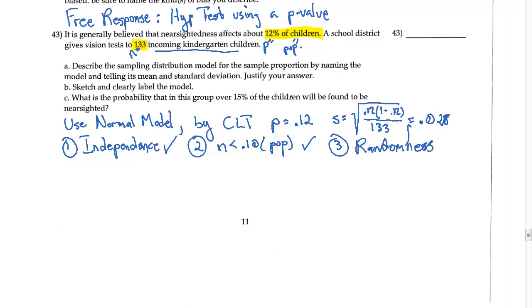Three is my randomness condition. And so we can assume that they were. It's all incoming children, but if the children are independent, there's probably some randomness there. I might feel a little better if it said they took a random sample of incoming kindergarten children, but I'm going to go ahead and say that that's okay.